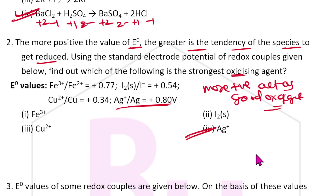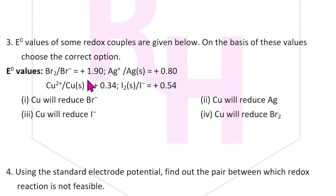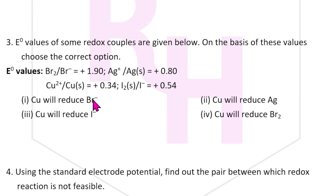Third question: E° naught values of some redox couples are given. Choose the correct option. The couples are Br2/Br⁻, Ag⁺/Ag, Cu²⁺/Cu, and I⁻/I2. In this case, Br2 to Br⁻ is reduction; I⁻ to I2 is oxidation; Ag⁺ to Ag is reduction. So Br⁻ is being oxidized, and Cu will reduce.